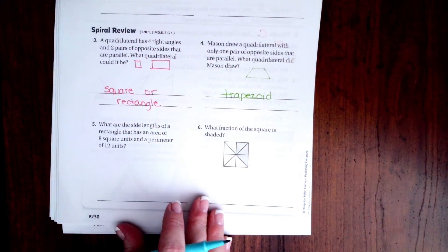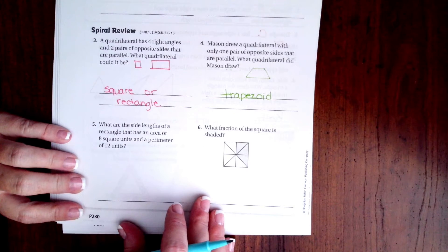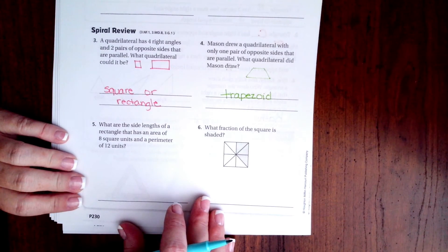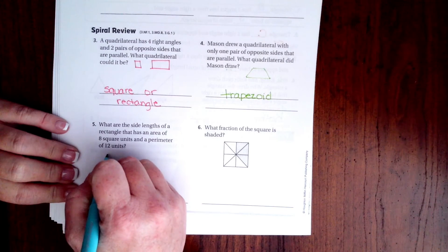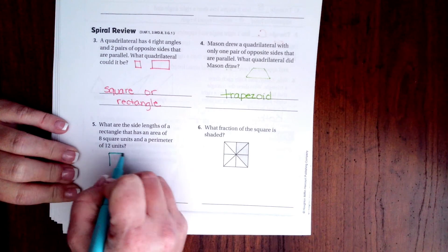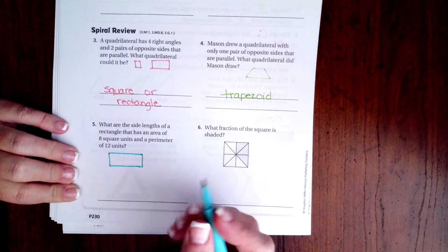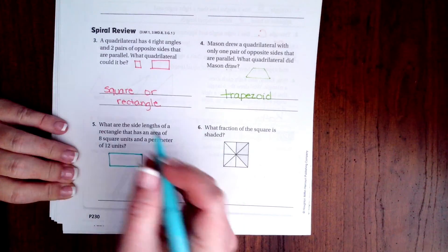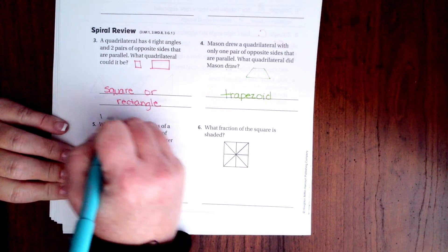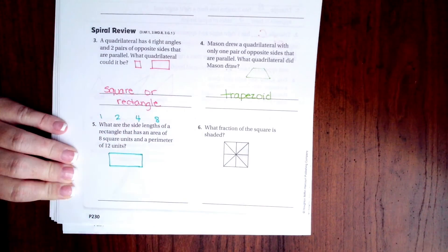What are the side lengths of a rectangle that has an area of eight units and a perimeter of 12 units? So let's do it this way. First off, an area of eight, so I need to know how I can make eight. I can make one times eight or I can do two times four.